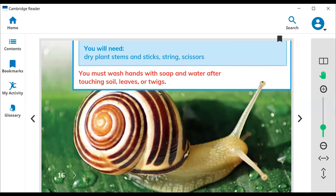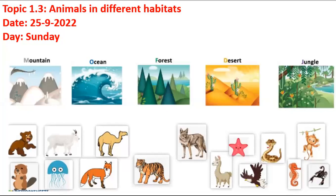In our previous lessons we learned about different environments where plants can grow and which habitat is good for each plant. In today's class we learn about animals and their habitats — which place is better for each animal, because animals need food, air, water, and shelter to grow and survive.